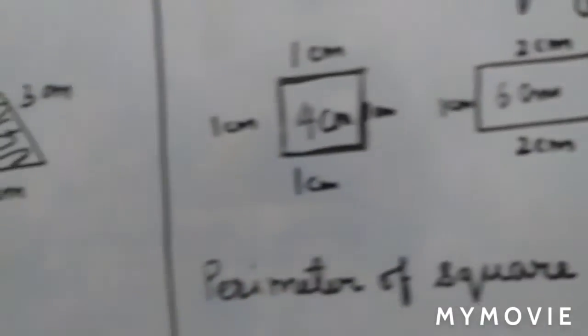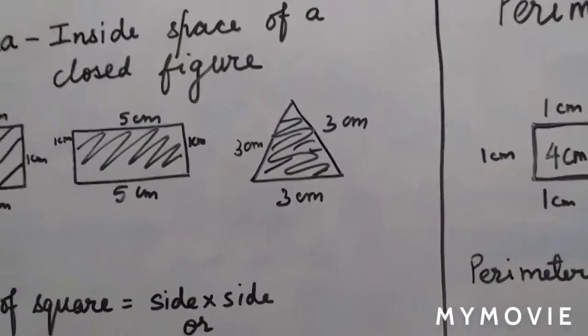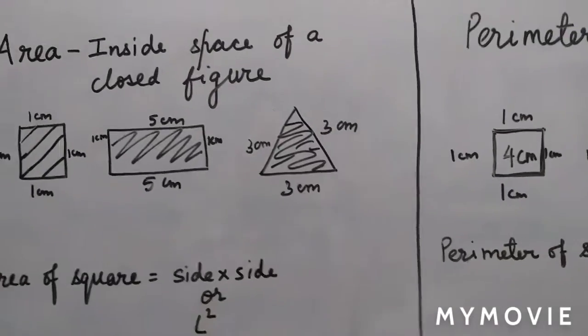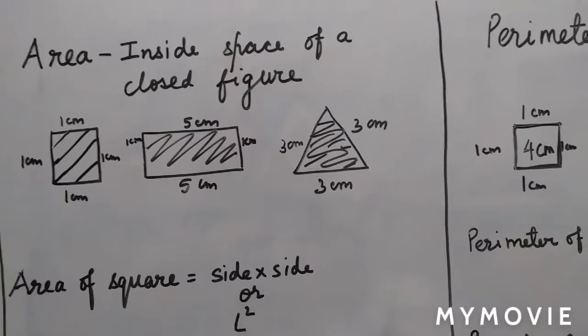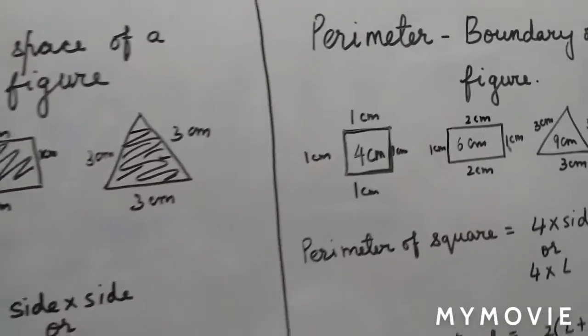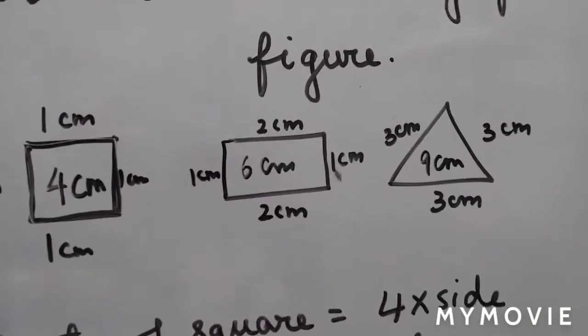Now what is the difference between the perimeter and the area? When we write the area, we write cm² or m², but when we write the perimeter, we write cm or m. The biggest difference is this.